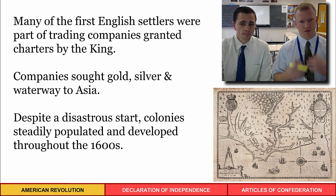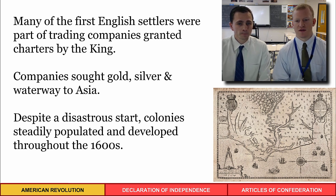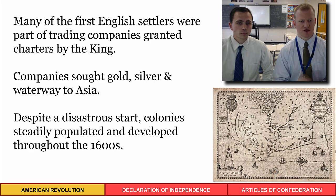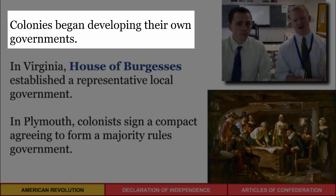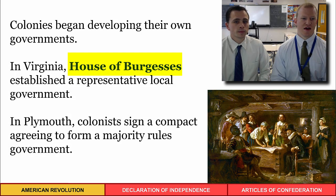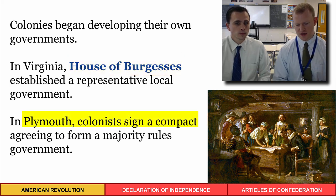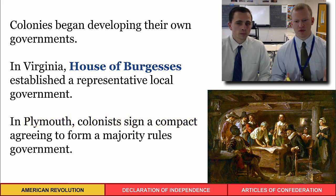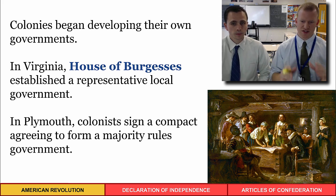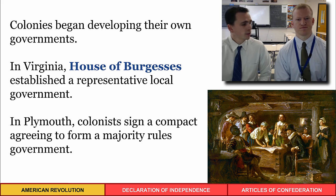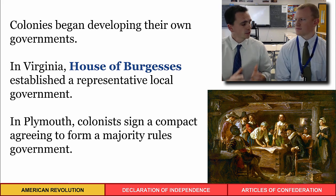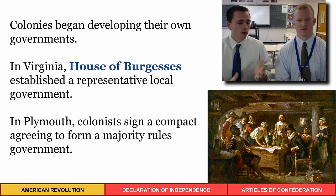Coming to a brand new area meant colonists had to develop some form of government. The colonies began to develop their own governments — in Virginia, the House of Burgesses established a representative local government, and in Plymouth Colony, colonists signed a compact agreeing to form a majority-rules government. Even as British colonies, there was already this idea of self-government in the New World.